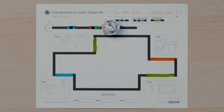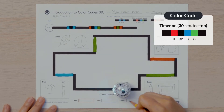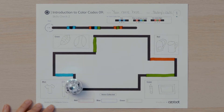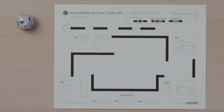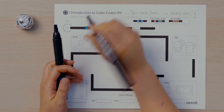Now that Ozobot knows what it will collect on its scavenger hunt, you need to program it to move. Ozobot will have 30 seconds to collect as many items as it can before the timer is up and the bot turns off. Ozobot should move fast. The fast color code is the first missing color code on the line after start. Find the fast color code in the key. I will put the color sequence blue, black, blue in the first three empty boxes after start.